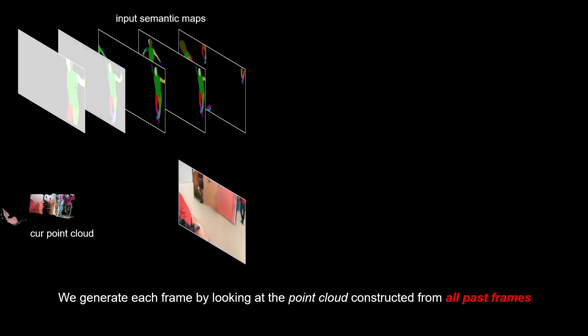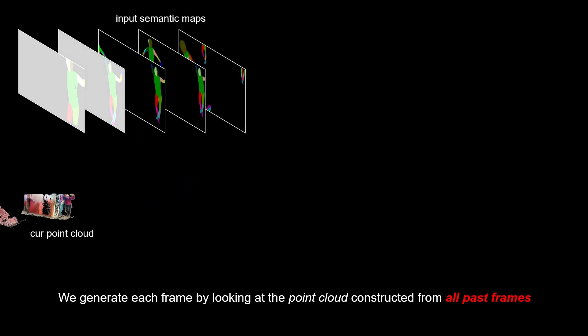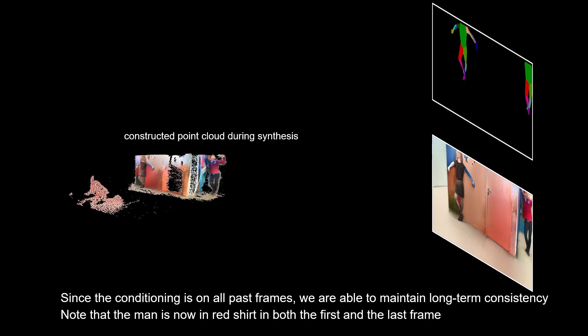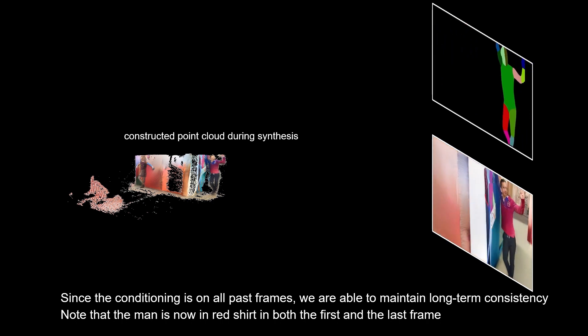After each frame is generated, the point cloud will also be updated. Since the conditioning is on all past frames, we are able to maintain long-term consistency. Note the man is now in red shirt in both the first and the last frame.